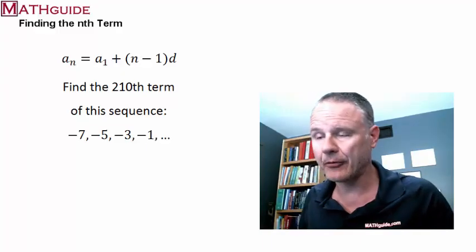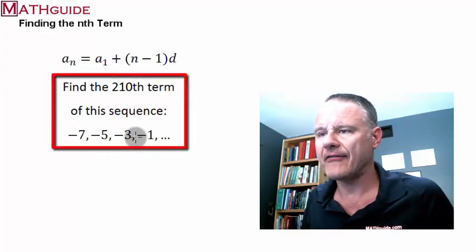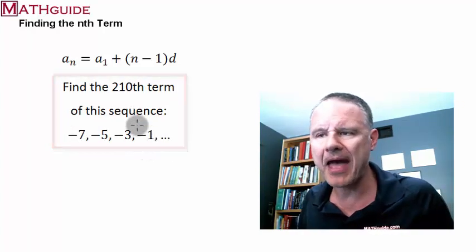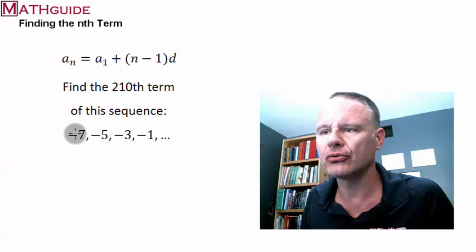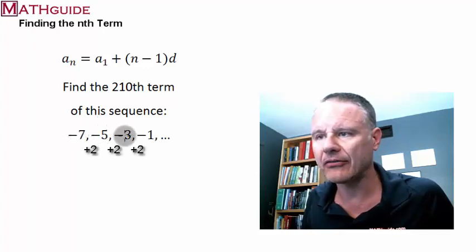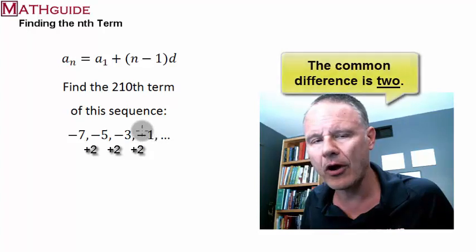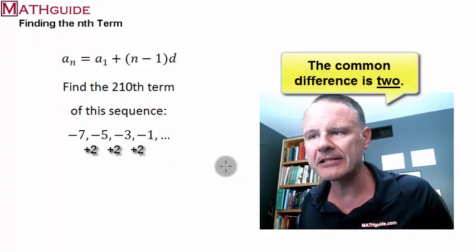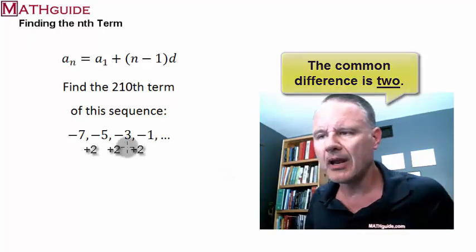Here's our second example. And you can see that we have the sequence up here. First of all, is it arithmetic? Let's see. I've got to add 2 to go from negative 7 to negative 5. If I add 2, I get negative 3. If I add 2 again, I get negative 1. So, yes, this is arithmetic. It looks like the common difference is 2. So, how do we find the 210th term?